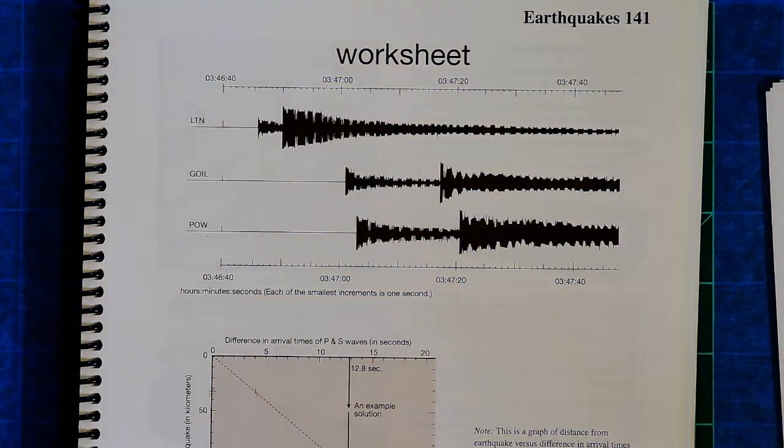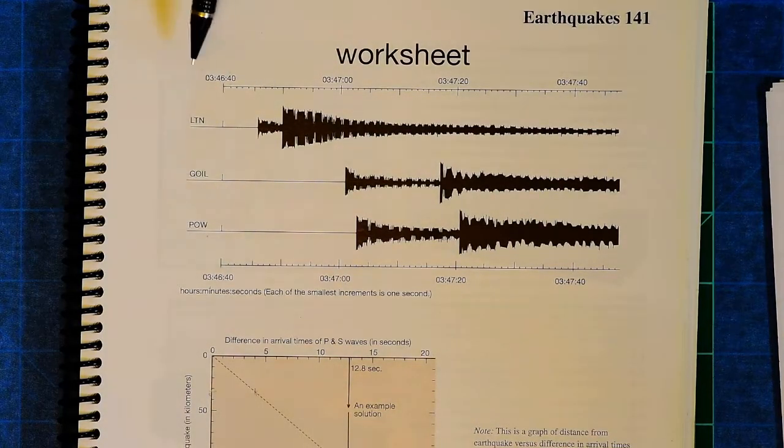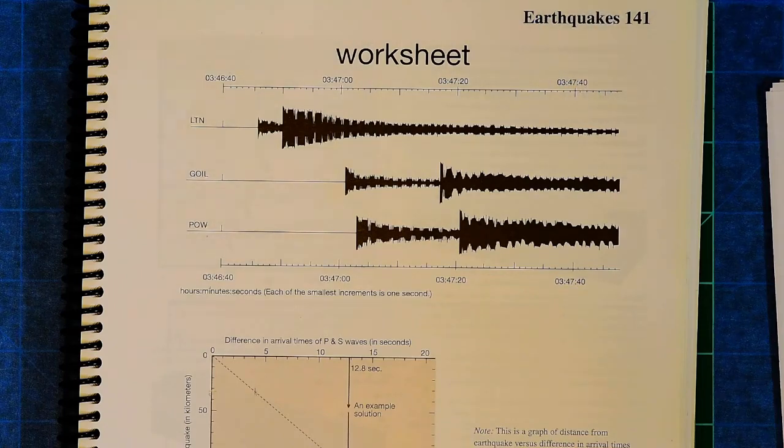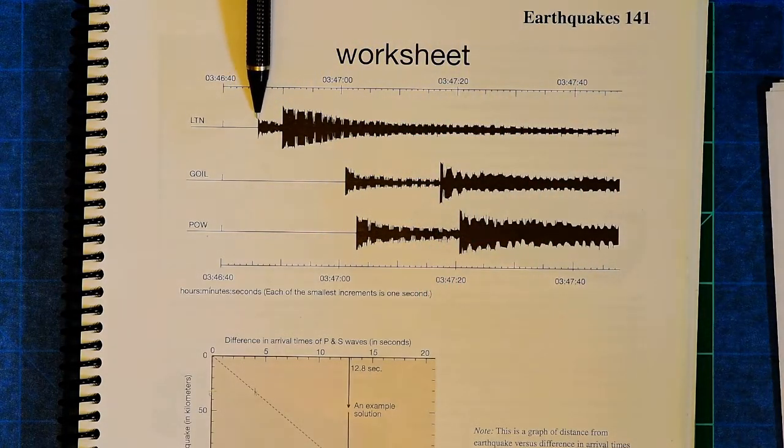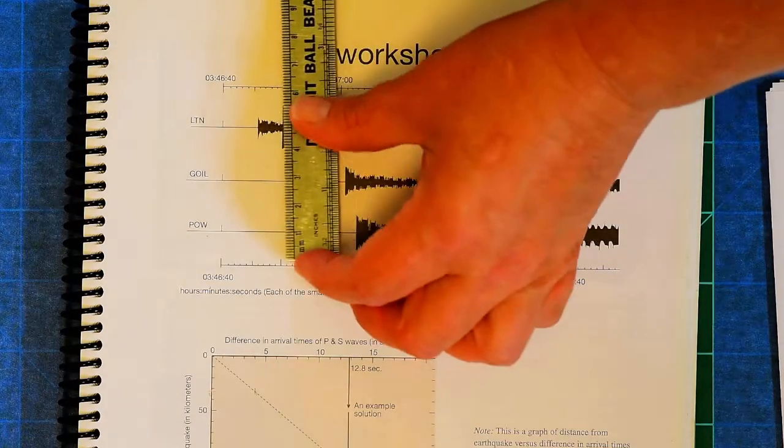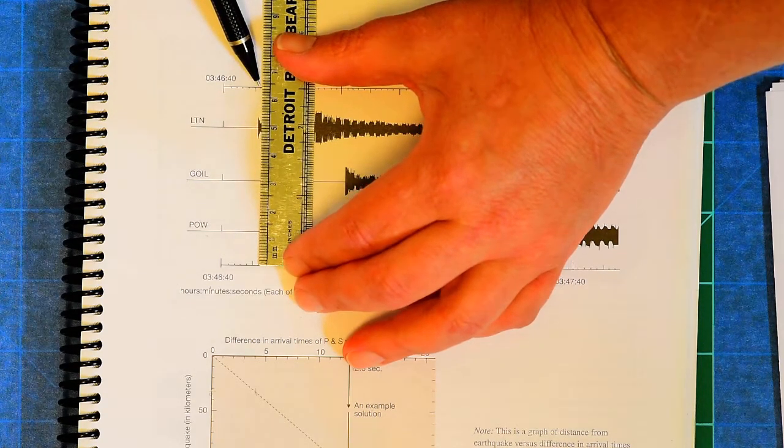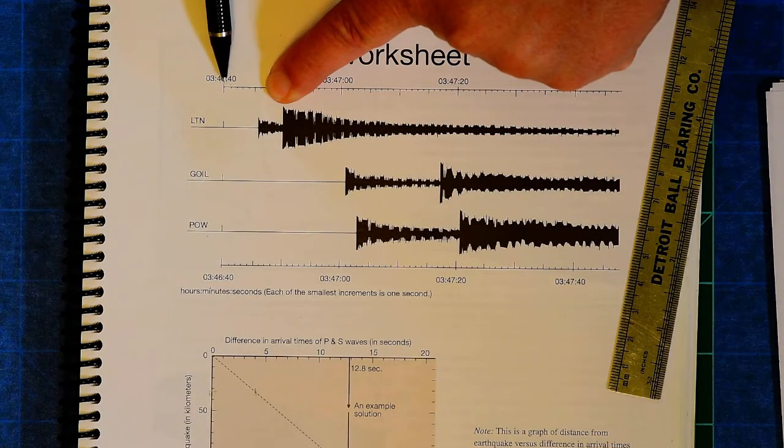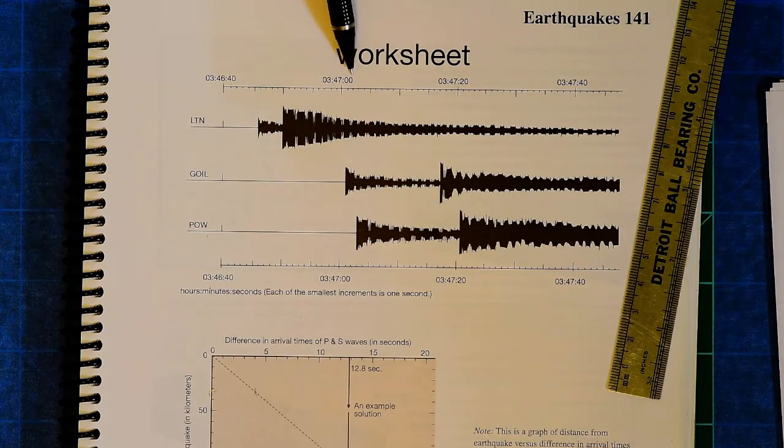So the first thing you want to measure is the P wave arrival time. And remember on these, the P wave is the first wave to arrive. The S wave is the second. And time is going in this direction. Up here on this graph, we have time shown in hours, minutes, and seconds. So right here is where the P wave first arrives. And so I'm just going to put my ruler there and say, all right, the P wave first arrives right here, right at that little thing. So if this is 3 hours, 46 minutes, 40 seconds, that's 3 hours, 47 minutes, 0 seconds.